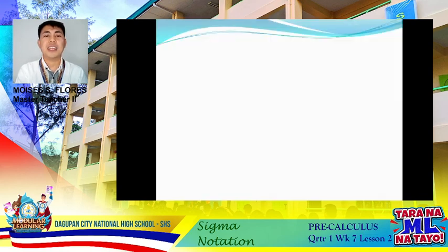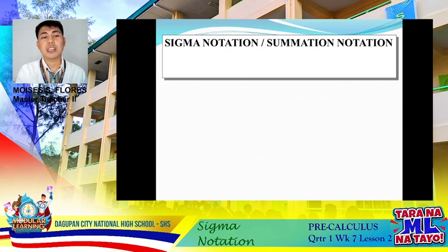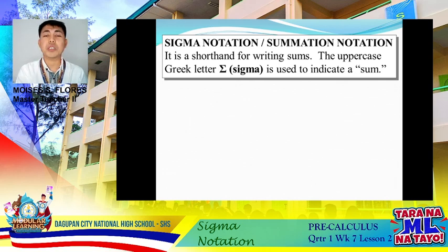Let's define what sigma notation is. In other textbooks or references, we could also call it summation notation. It is a shorthand or shortcut for writing sums, and we use the uppercase Greek letter sigma to indicate the sum.